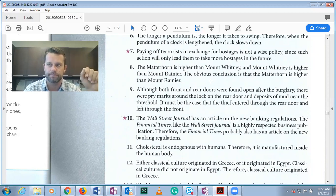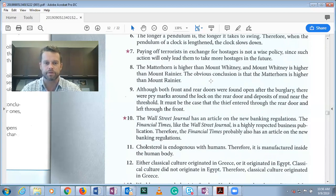Number nine: Although both front and rear doors were found open after the burglary, there were pry marks around the lock on the rear door and deposits of mud near the threshold. It must be the case that the thief entered through the rear door and left through the front.